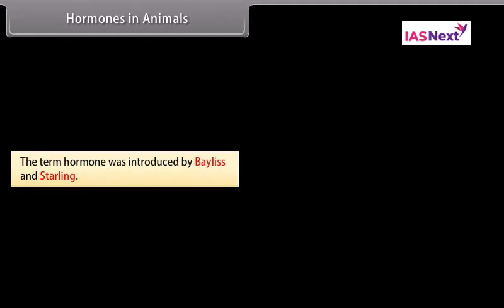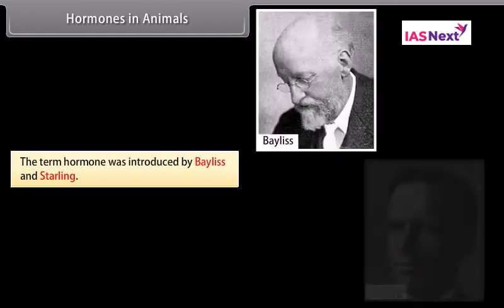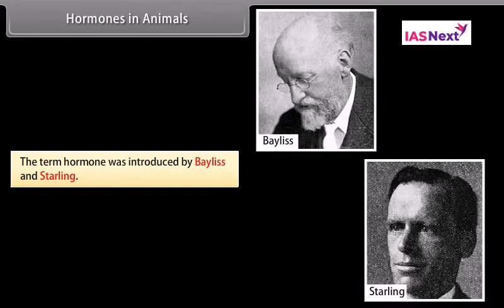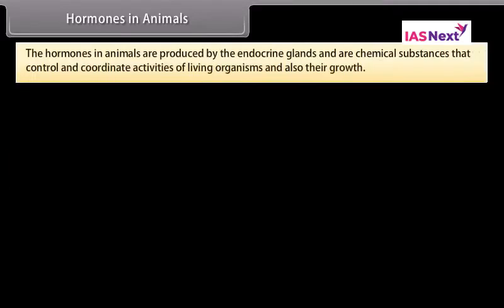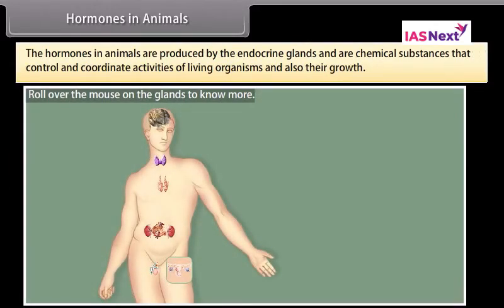Hormones in animals: The term hormone was introduced by Bayliss and Starling. The hormones in animals are produced by the endocrine glands and are chemical substances that control and coordinate activities of living organisms and also their growth.